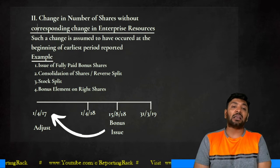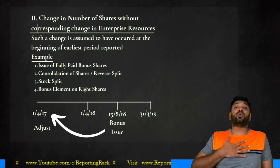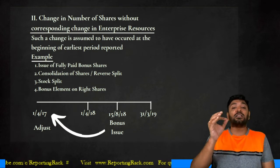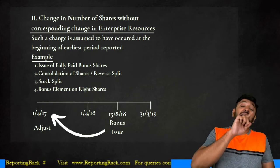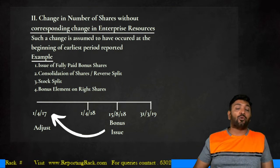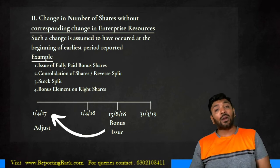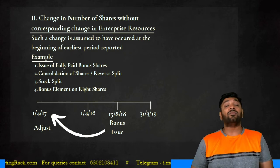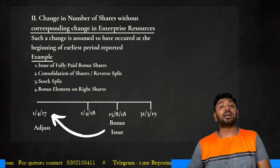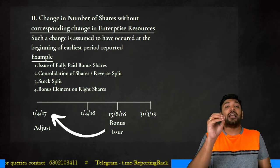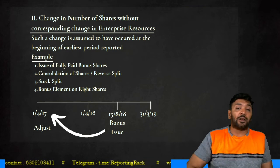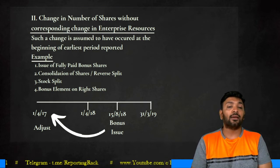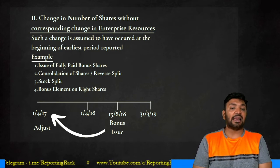What is the beginning of the earliest period reported? For the current year 2021-22, if a bonus issue is declared on 15th August, the comparative previous year is 2020-21, and the beginning of the earliest period reported is 1st April 2020. So the increase in shares without corresponding increase in enterprise resources is assumed to have occurred at 1st April 2020.